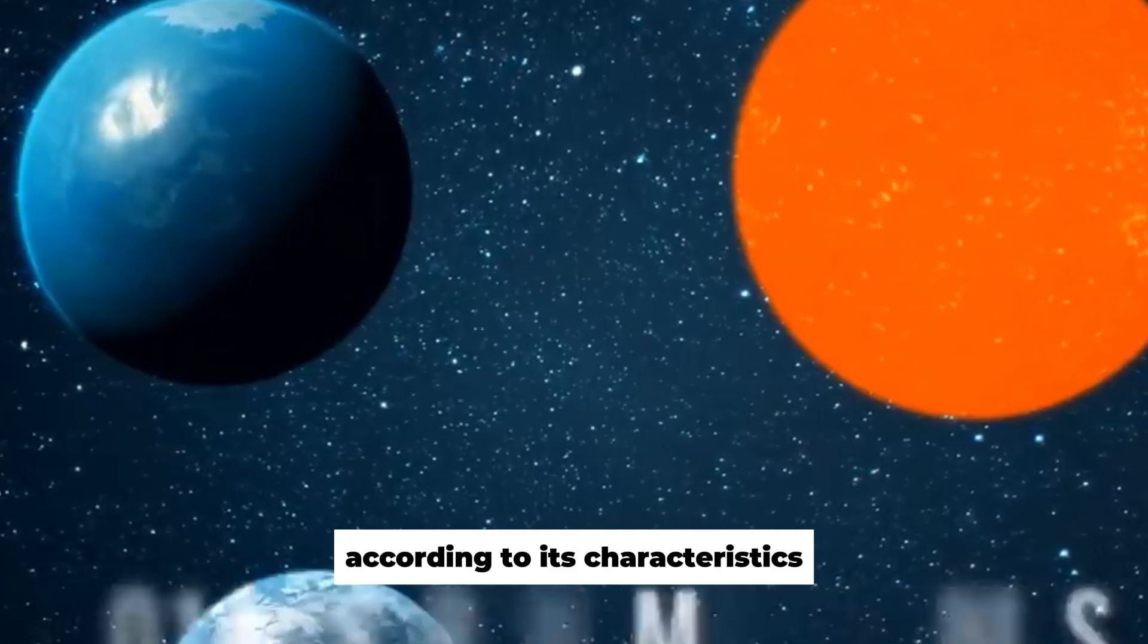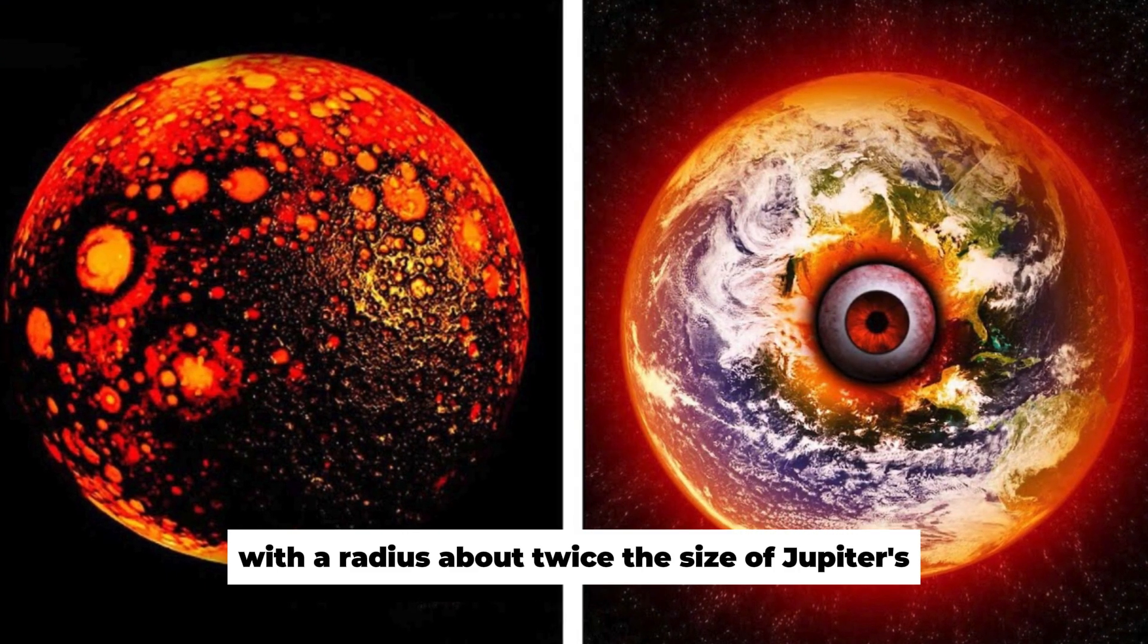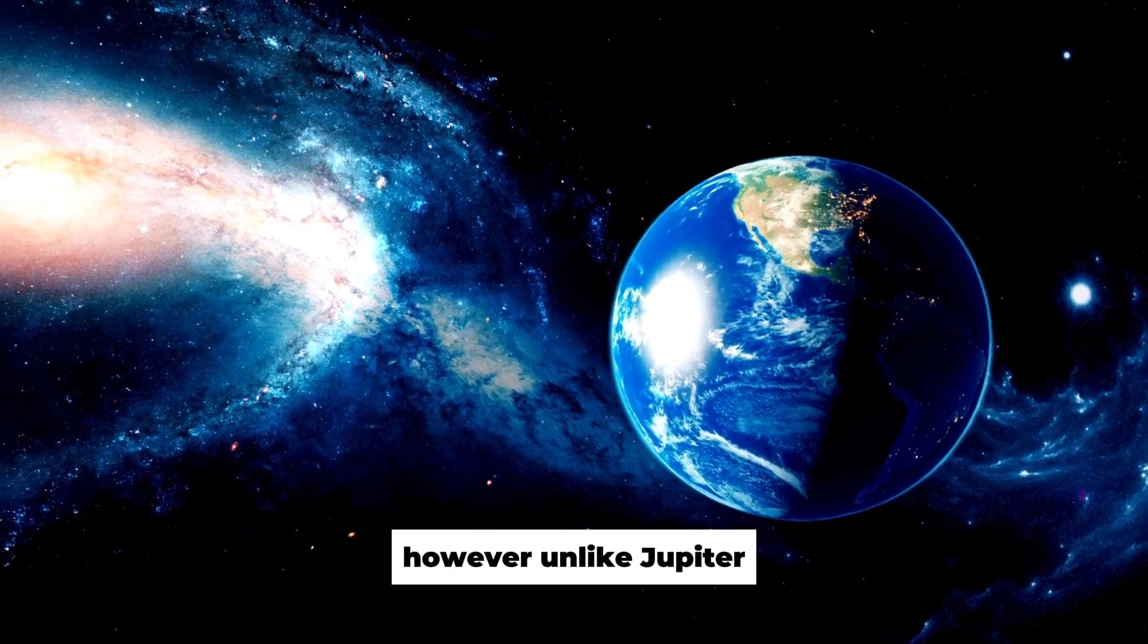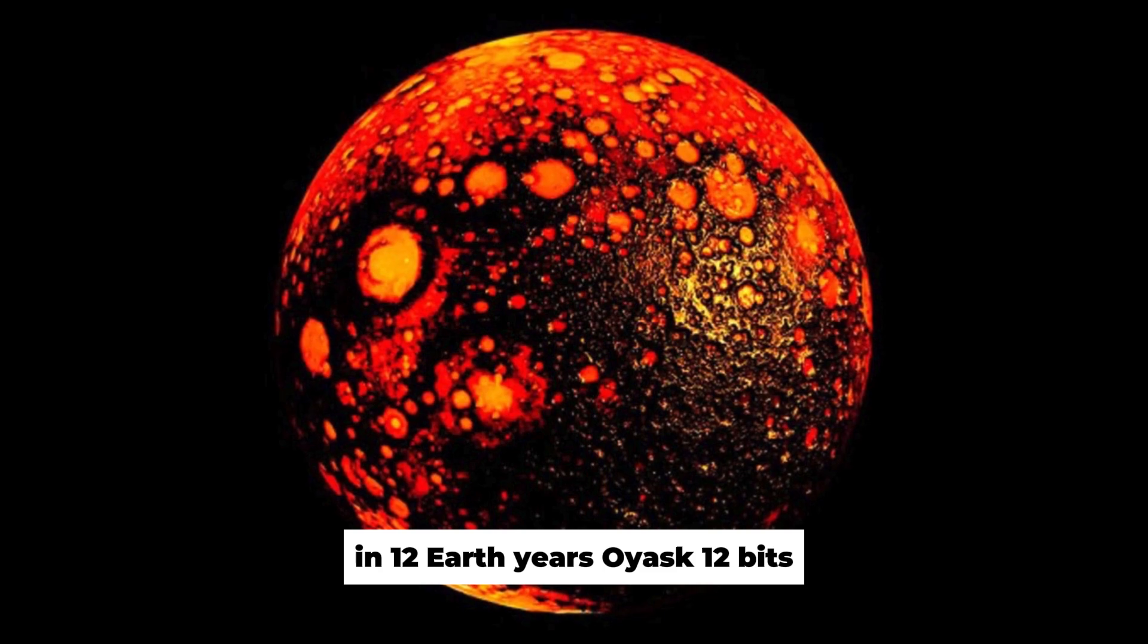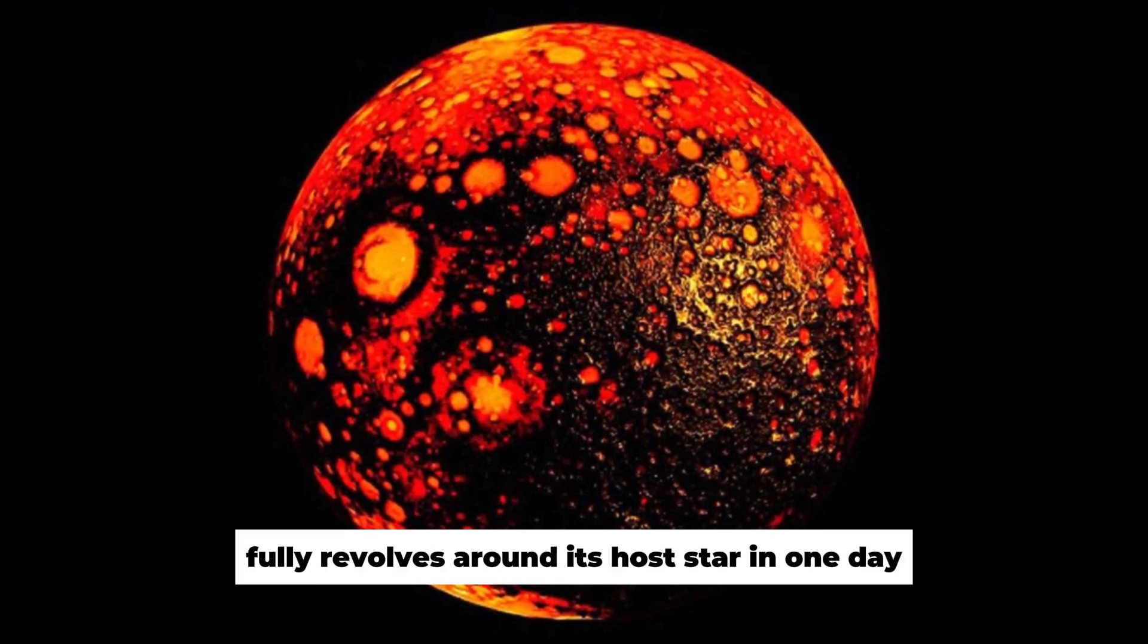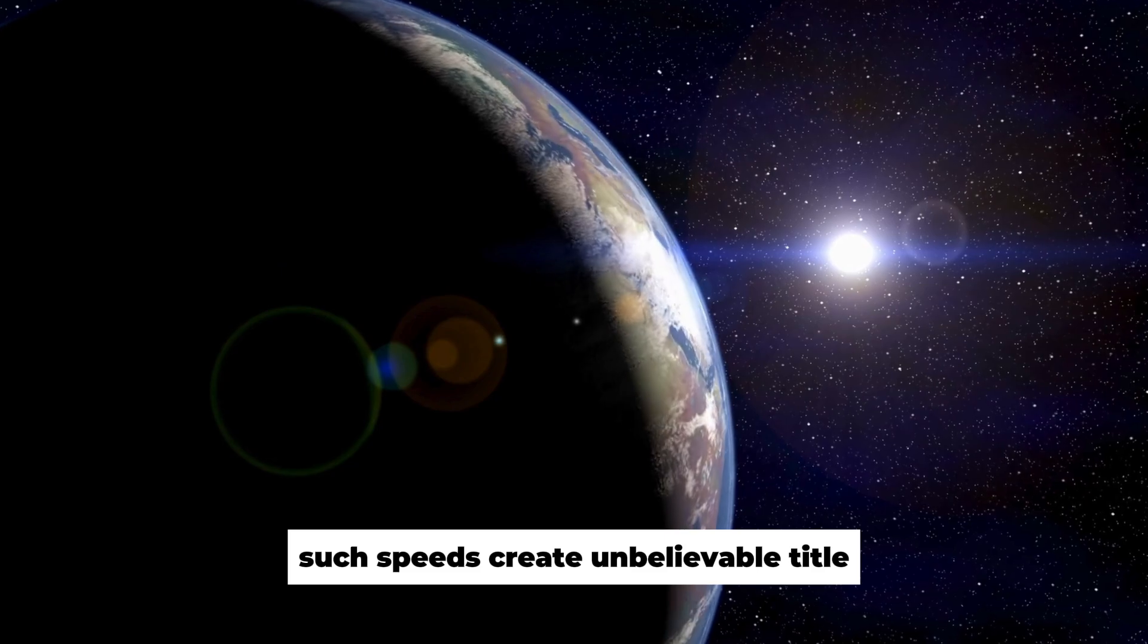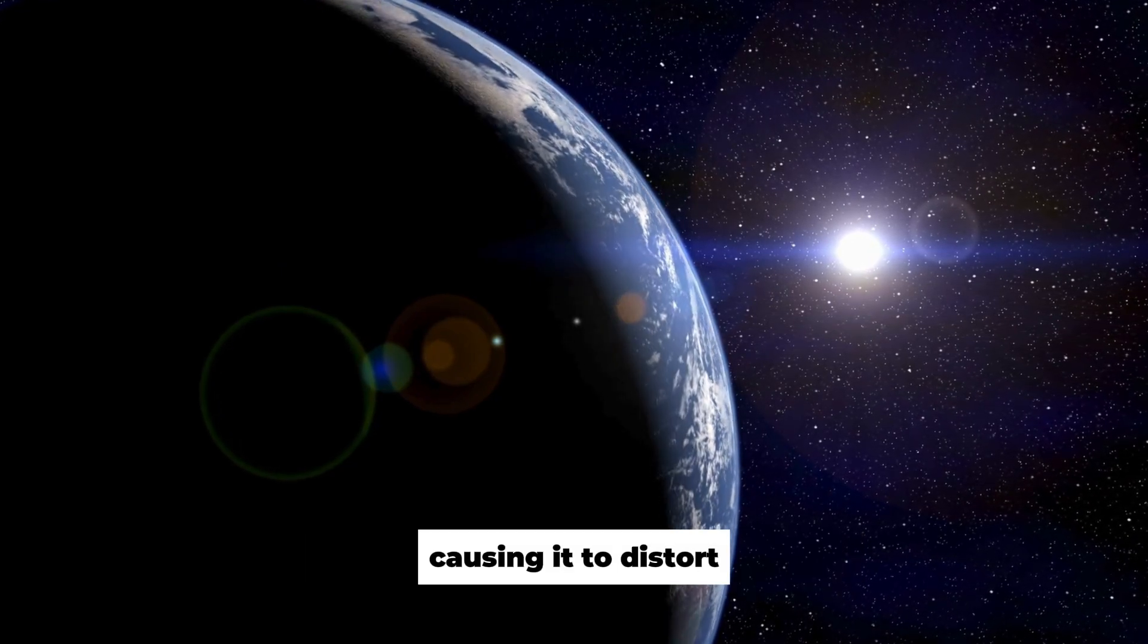According to its characteristics, WASP-12b is a gas giant with a radius about twice the size of Jupiter's. However, unlike Jupiter, which performs one full revolution around the Sun in 12 Earth years, WASP-12b fully revolves around its host star in one day. Such speeds create unbelievable tidal forces on the surface of the planet, causing it to distort.